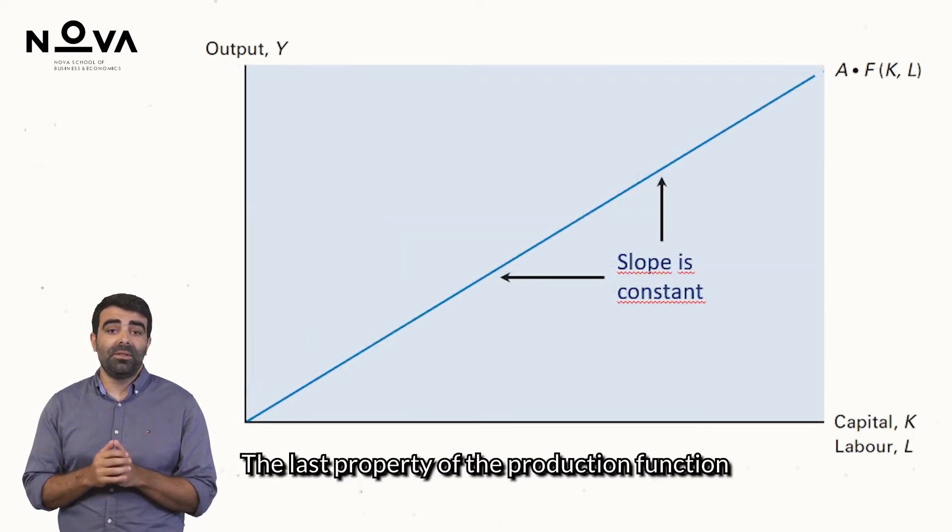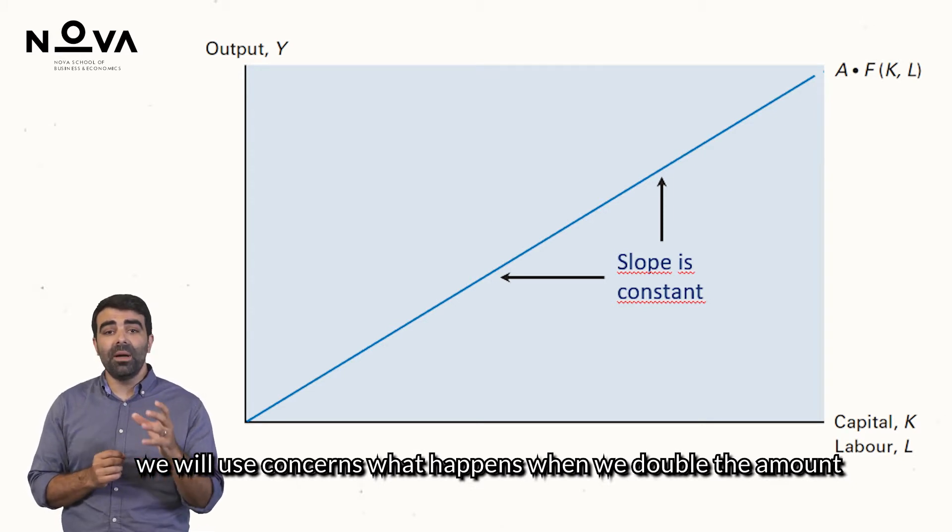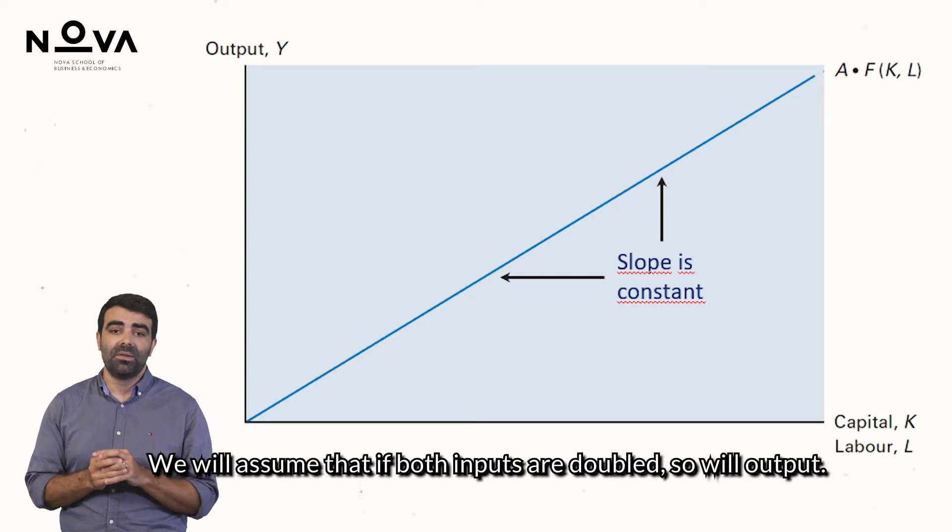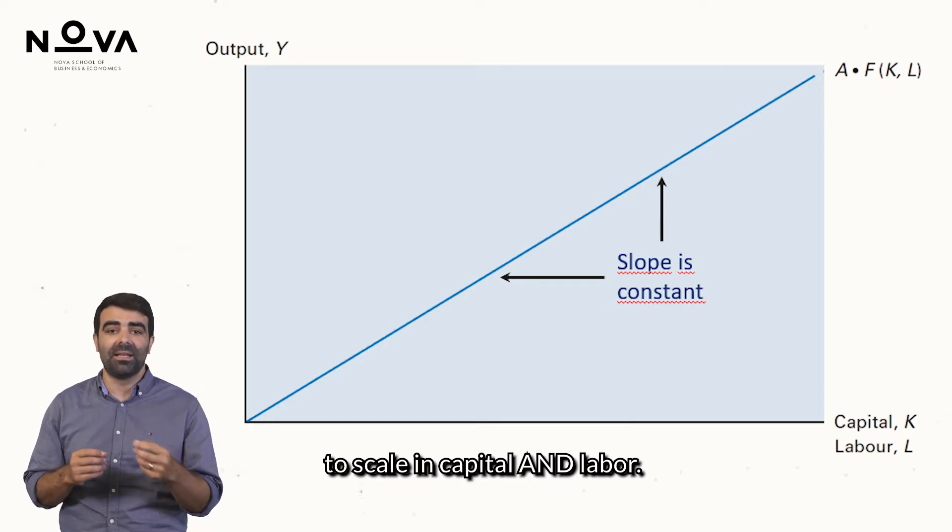The last property of the production function we will use concerns what happens when we double the amount of capital and labour at the same time. We will assume that if both inputs are double, so will output. This means the production function exhibits constant returns to scale in capital and labour.